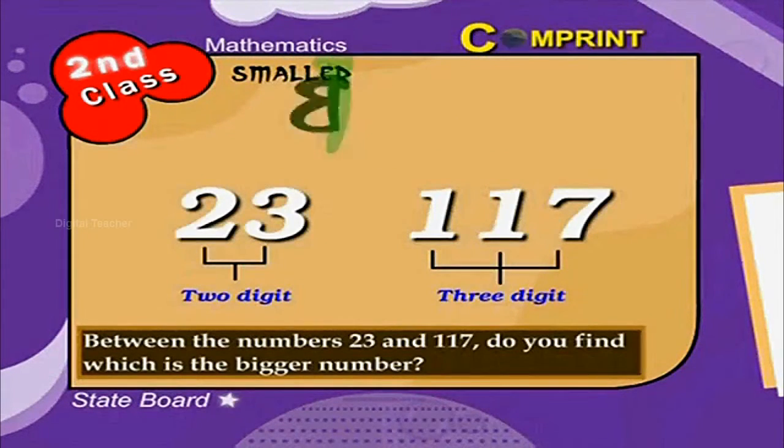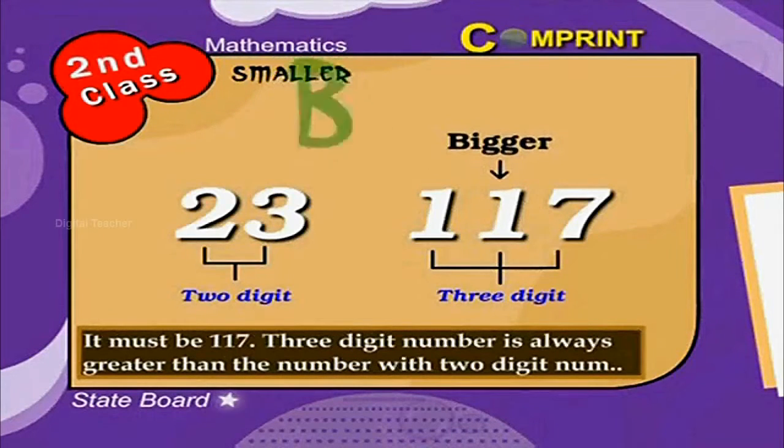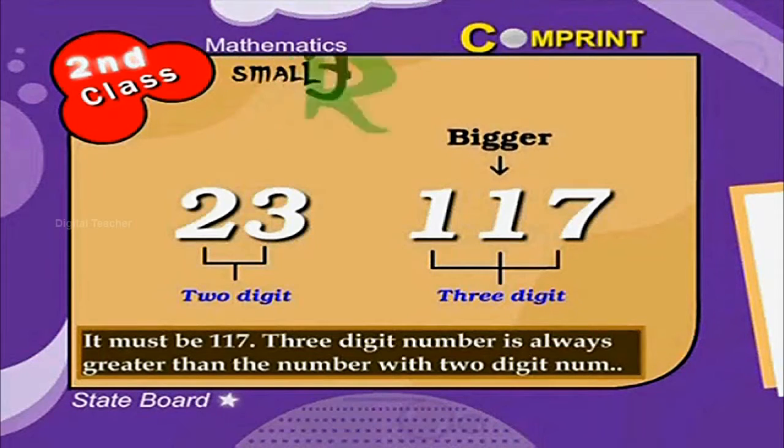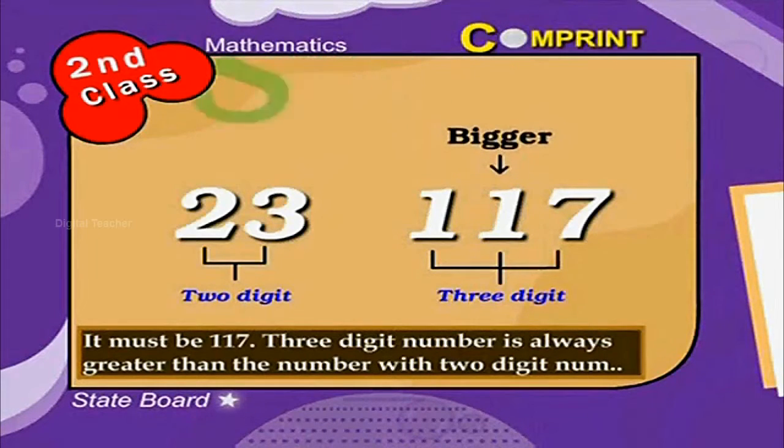Between the numbers 23 and 117, do you find which is the bigger number? No doubt about it, it must be 117. The reason is a 3-digit number is always greater than a 2-digit number.